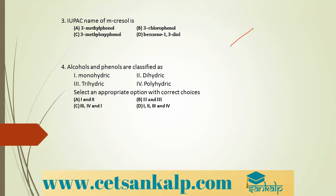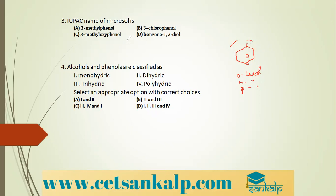What is the IUPAC name of m-cresol? Cresol is phenol with a CH3 group attached to the benzene ring. m-Cresol is metacresol, meaning the CH3 group is at the meta position — that is carbon 3. So the IUPAC name is 3-methylphenol.